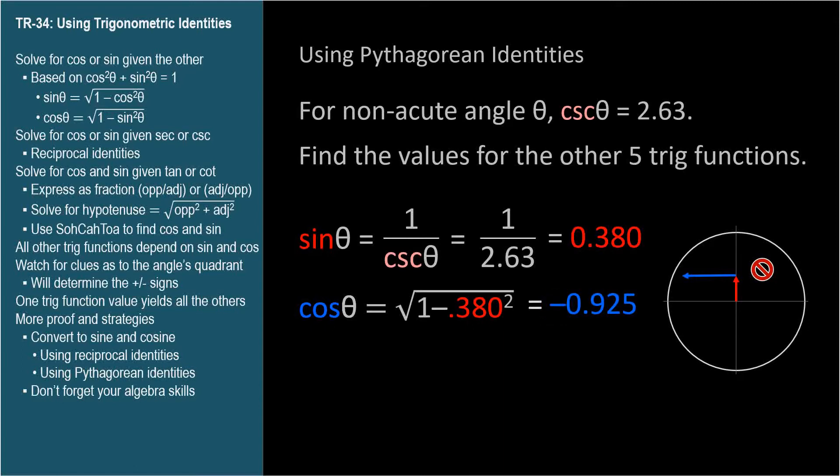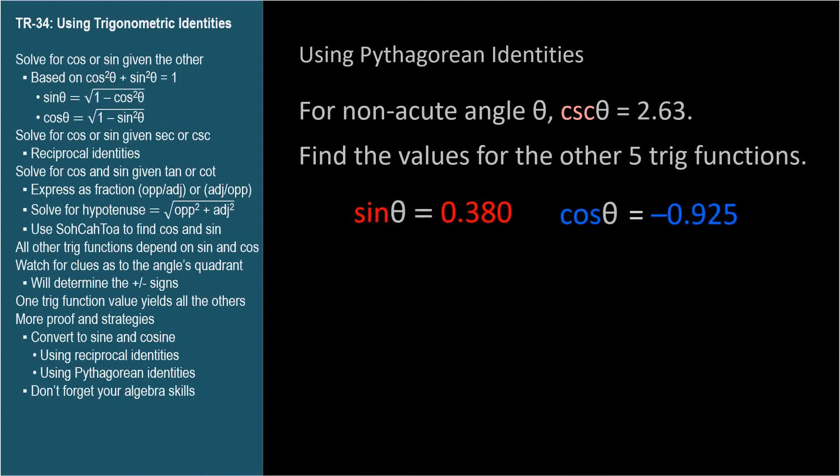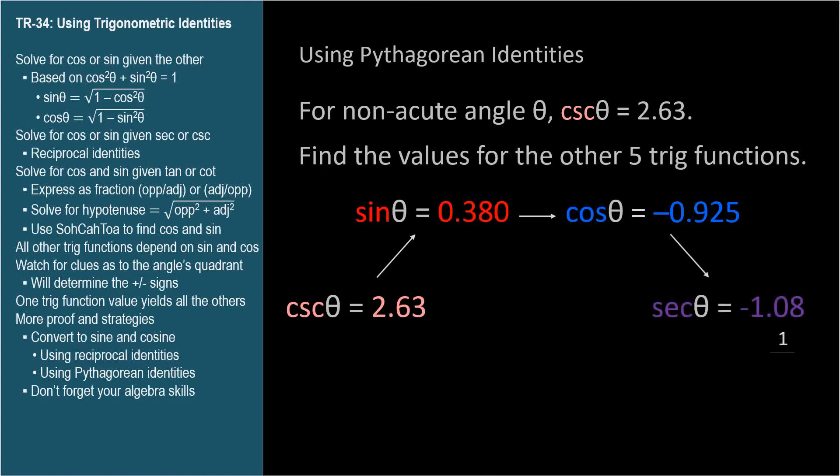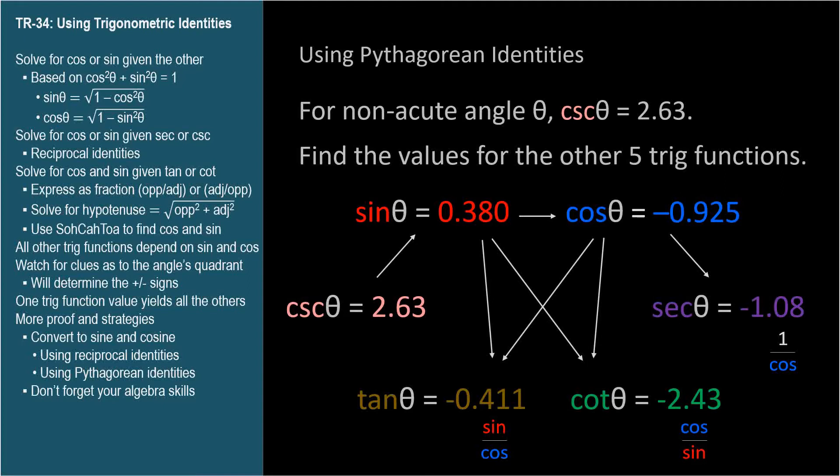So, given the cosecant, we quickly found sine, then cosine. Now we can easily determine the secant, tangent, and cotangent for the nonacute angle, whose cosecant is 2.63.